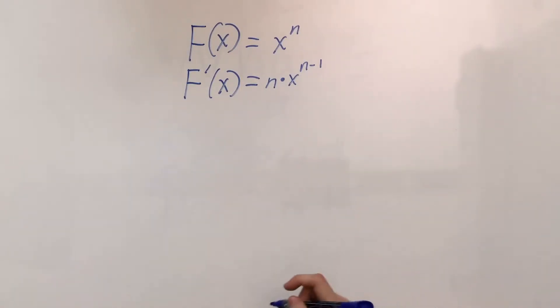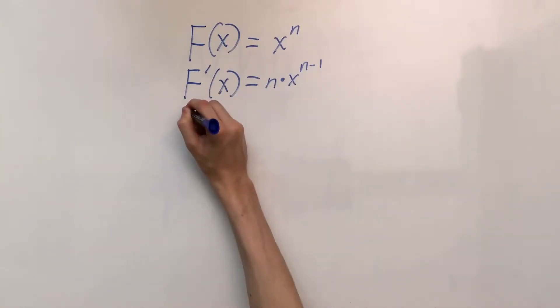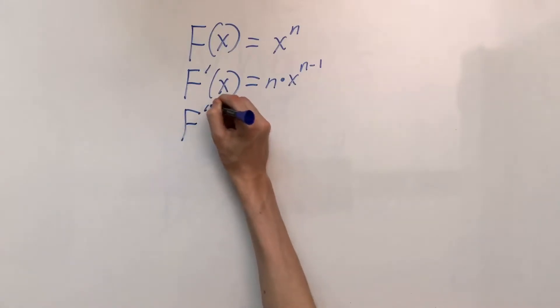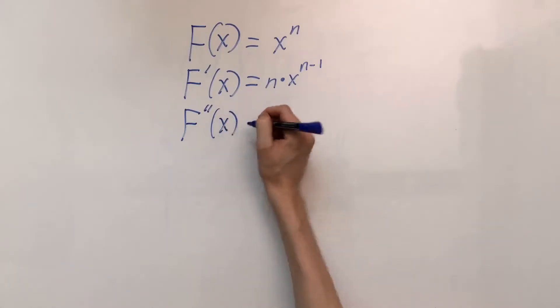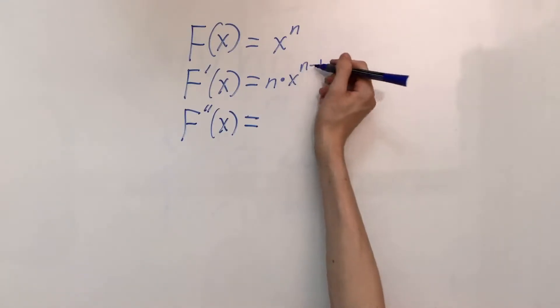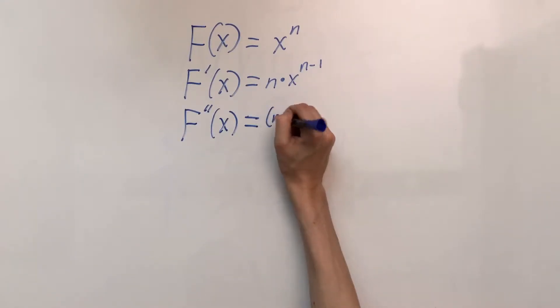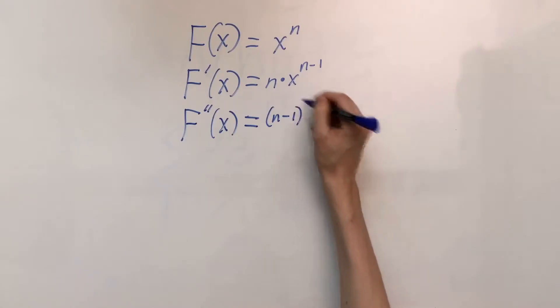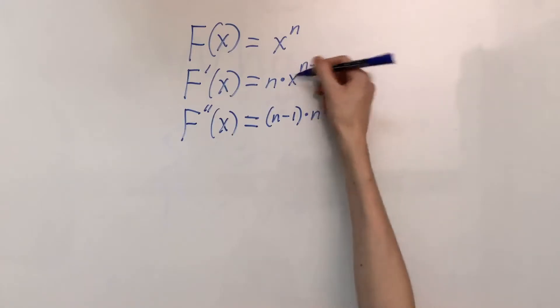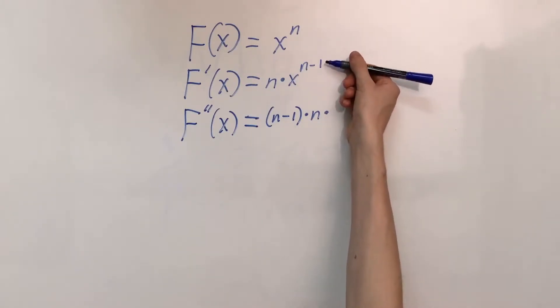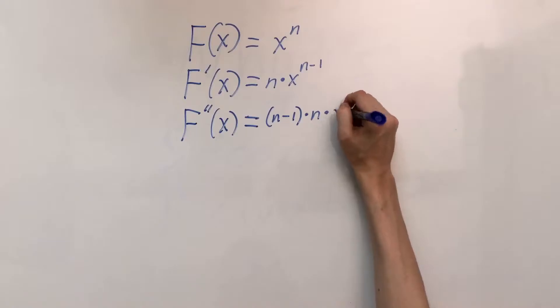So that would be the second derivative of said position function. It can be a little bit harder to notate in this form, but we'll give it a shot. So if we've got f with two tick marks to denote that it's a second derivative of still x, we know that that is equal to, well we got to bring this down again, so that's n minus 1 times n times x to the power of, well n minus 1 minus 1 is just x to the power of n minus 2.